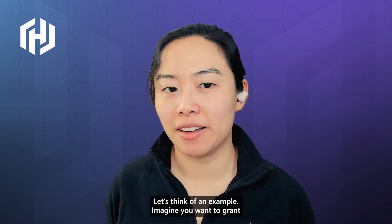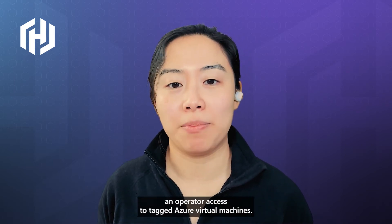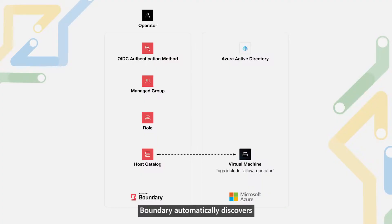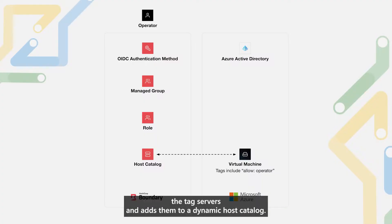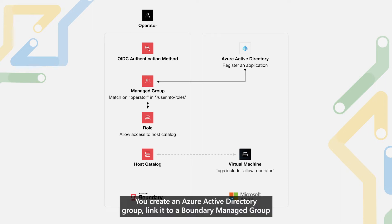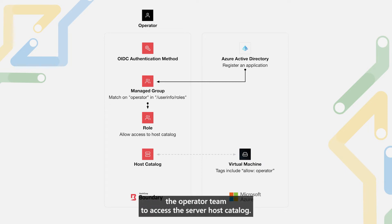Let's think of an example. Imagine you want to grant an operator access to tagged Azure virtual machines. Boundary automatically discovers the tagged servers and adds them to a dynamic host catalog. You create an Azure Active Directory group, link it to a Boundary managed group, and add a Boundary role that only allows the operator team to access the server host catalog.